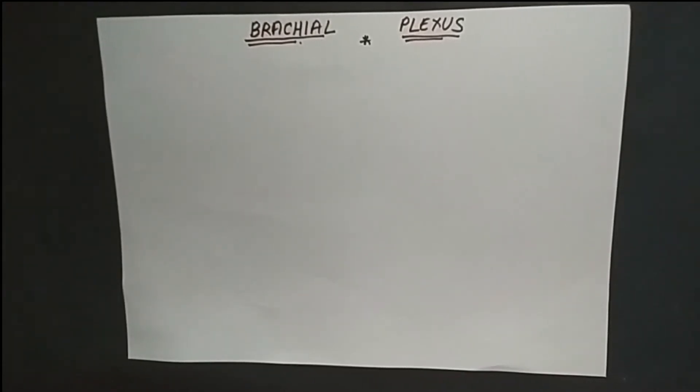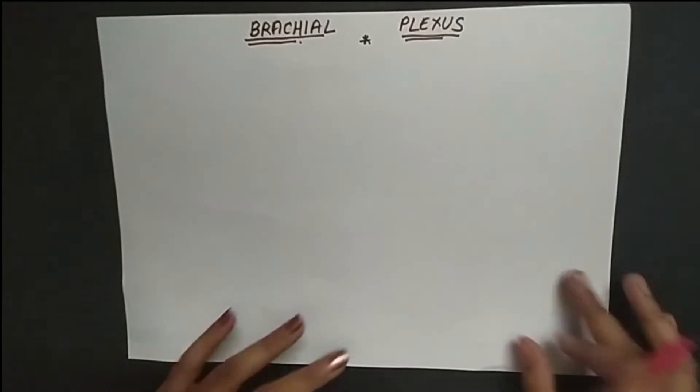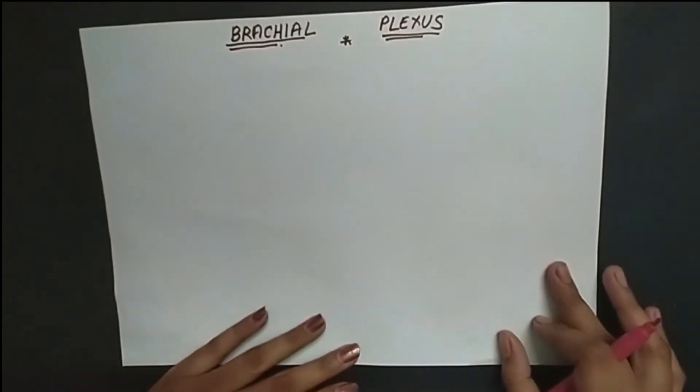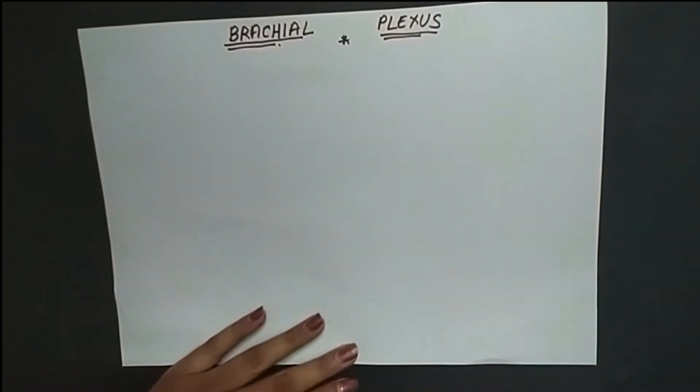In the brachial plexus, the structure consists of: first the roots, second the trunks, then divisions, then cords, and then the branches. So let's start the drawing.